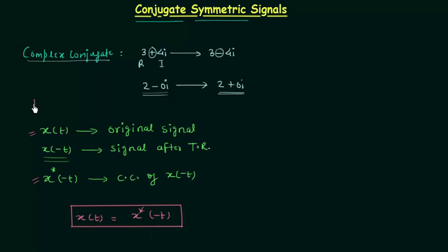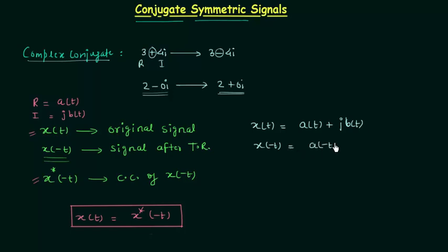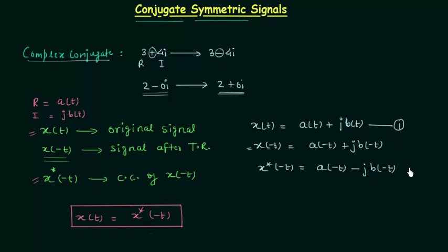The real part of signal x(t) is a(t) and the imaginary part is j·b(t), so x(t) = a(t) + j·b(t). If we find x(-t), we have a(-t) + j·b(-t). After this, we obtain the complex conjugate x*(-t), which equals a(-t) minus j·b(-t), since the real part remains the same but we change the sign of the imaginary part.